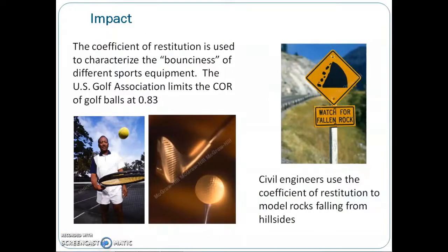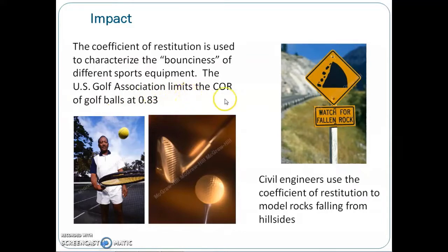These are some examples of how the coefficient of restitution is used in practice. In sports equipment, the coefficient of restitution characterizes the bounciness of different equipment — for example, the U.S. Golf Association limits the COR of a golf ball to 0.83. Civil engineers also use the coefficient of restitution to model rocks falling from hillsides.